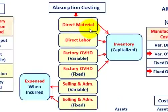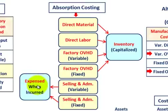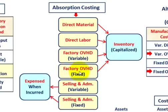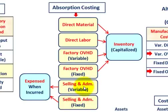For absorption costing, we need to determine what's going into our inventory account and being capitalized versus what's going to be expensed when it's incurred. For absorption costing, the direct material, direct labor, factory overhead — both the variable portion and the fixed portion — all flow into our inventory account and are capitalized. The only thing that's being expensed is the selling and administrative costs — both the variable and fixed portions.